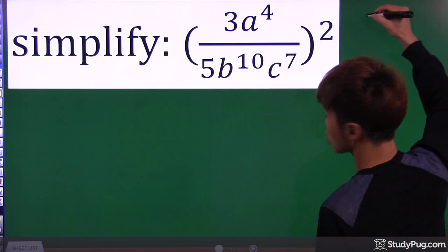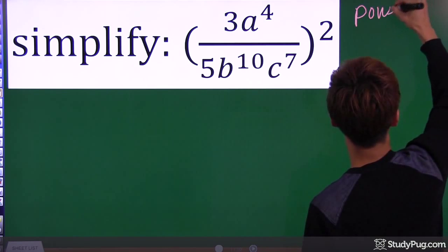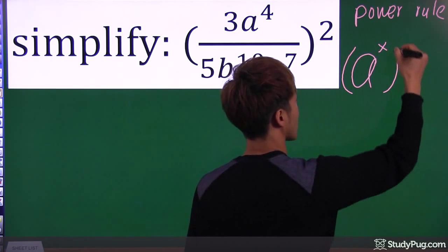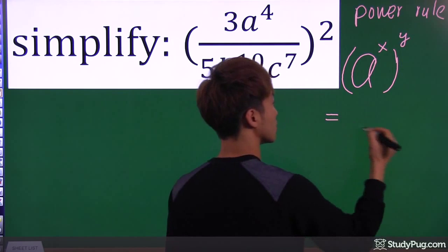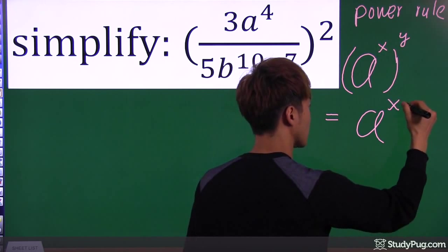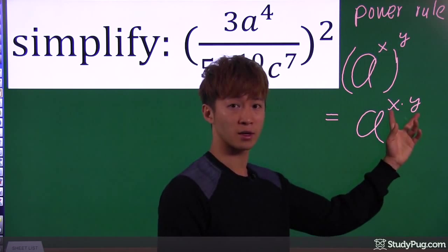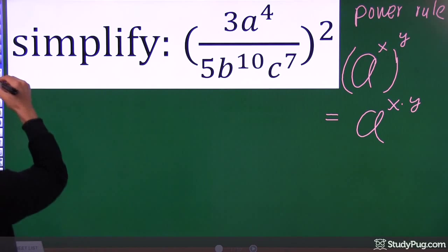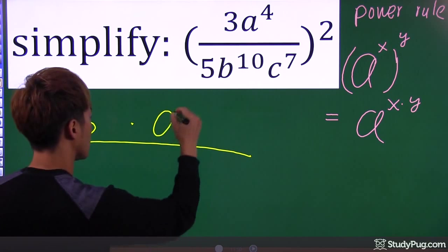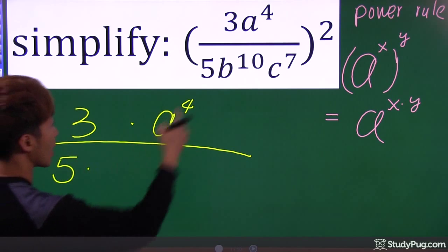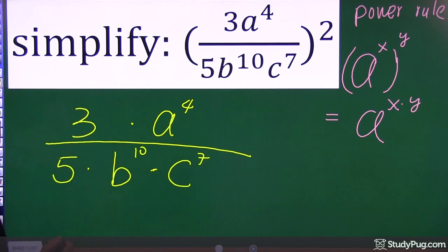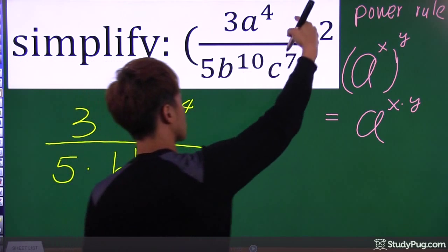To simplify this expression, we have to apply the power rule. If we have a to the power of x, outside the whole thing to the power of y, we know that when you have an exponent and exponent right next to each other, you can just put them together — basically, multiply the exponents. The question has 3 and a to the power of 4 on top, and on the bottom 5, b to the power of 10, and c to the power of 7. We want the whole thing to the power of 2.